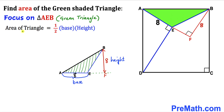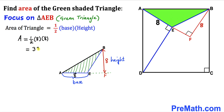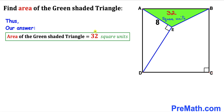Recalling the area of a triangle formula — Area = one-half times base times height — our base is 8 and our height is 8. So the area equals one-half times 8 times 8, which simplifies to 32 square units. The area of the green shaded triangle is 32 square units.